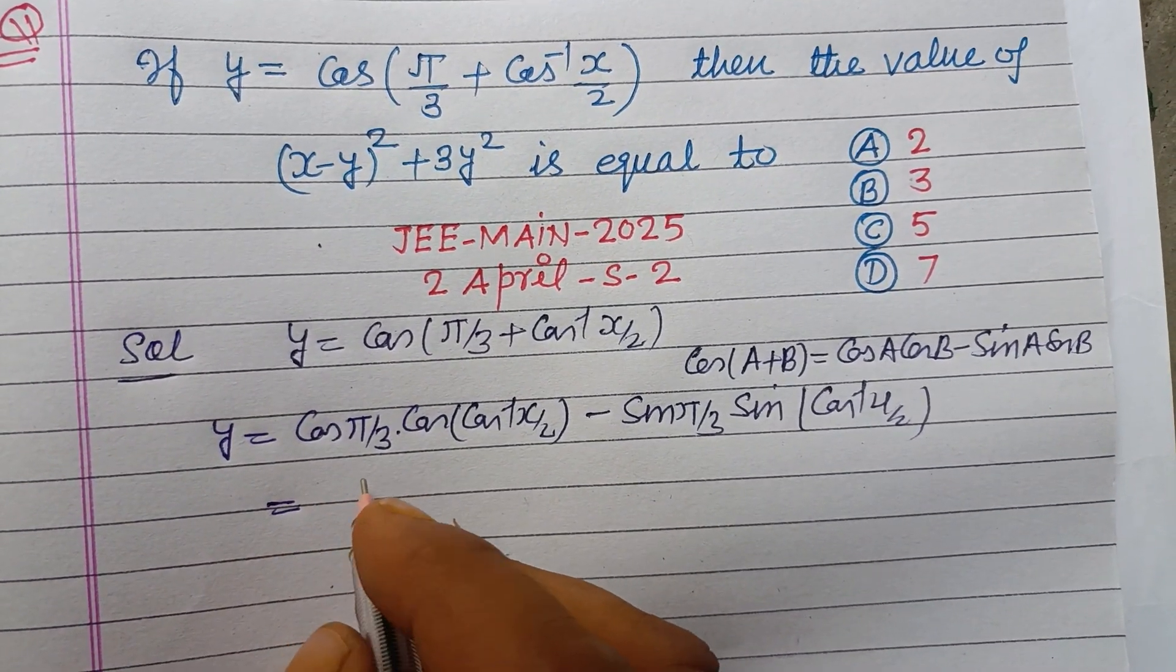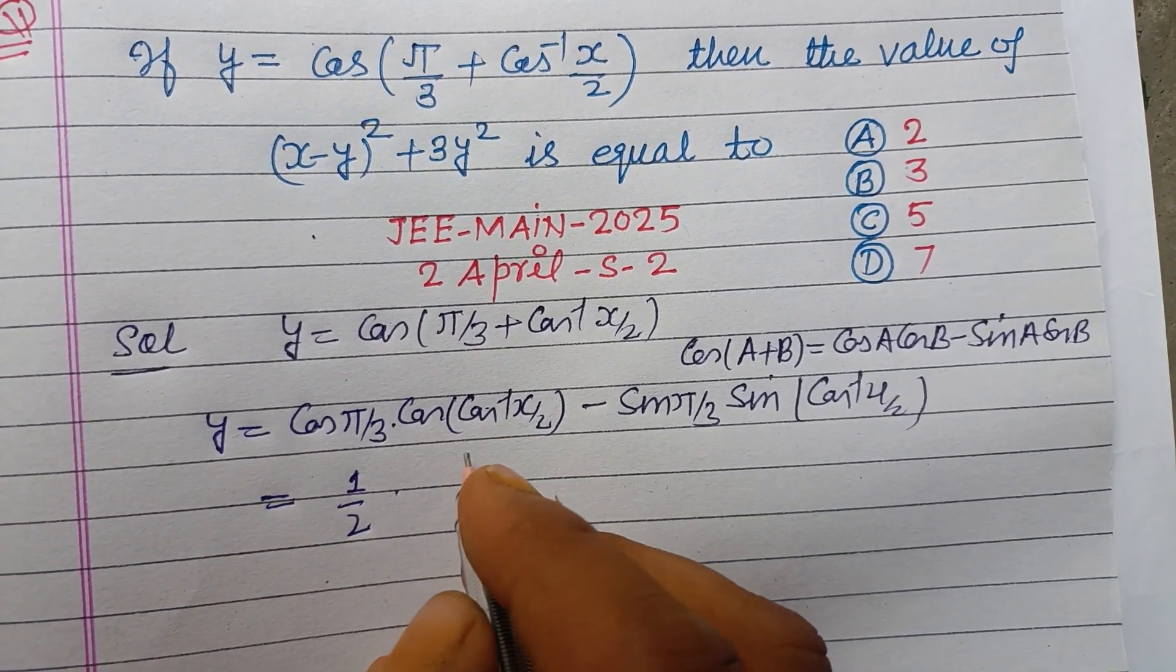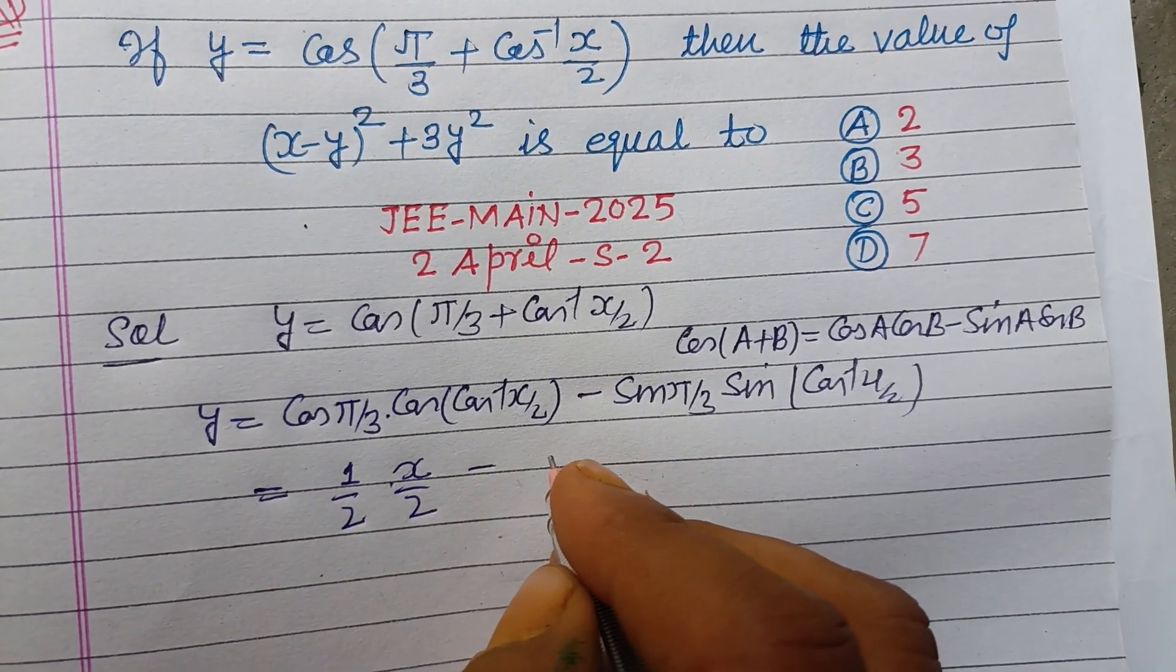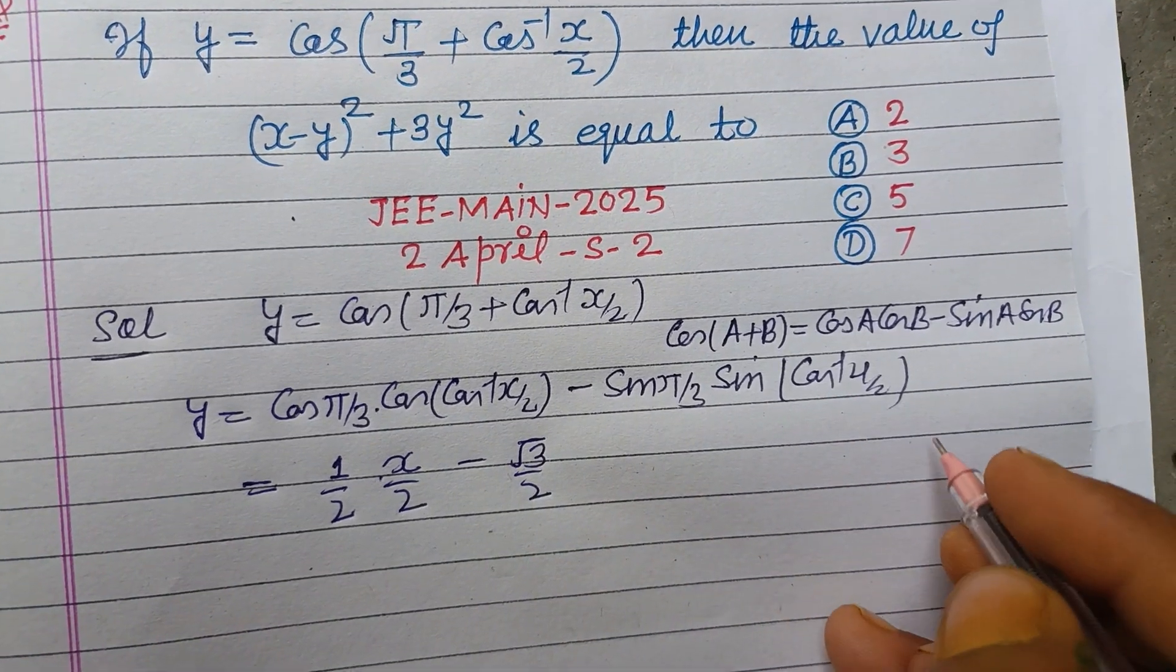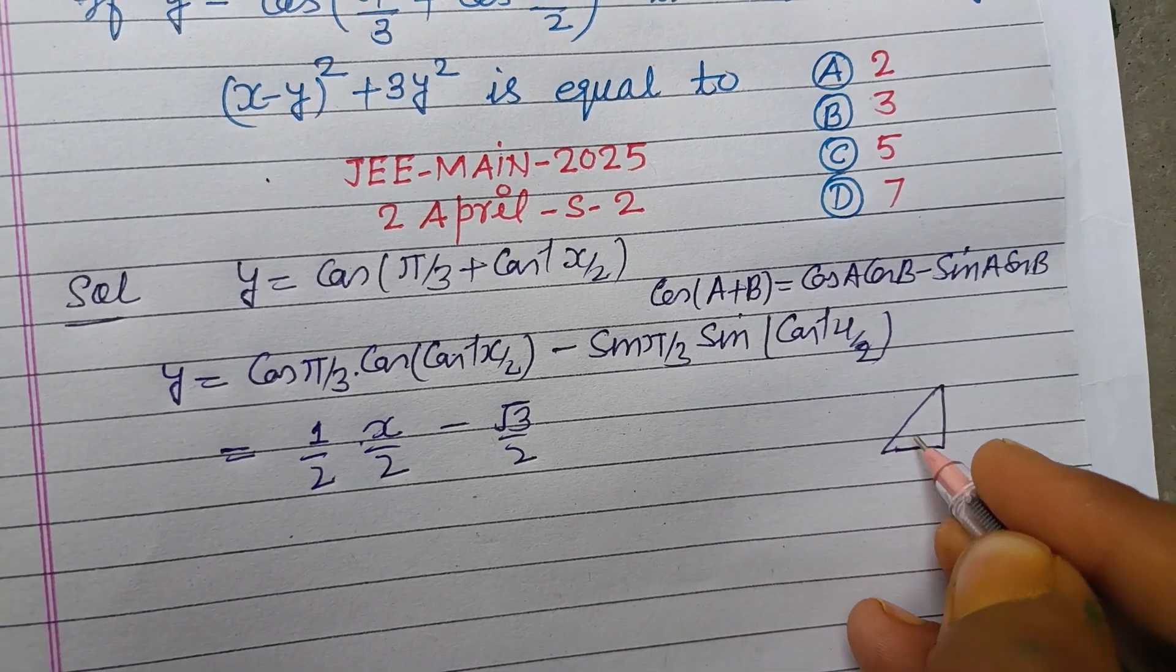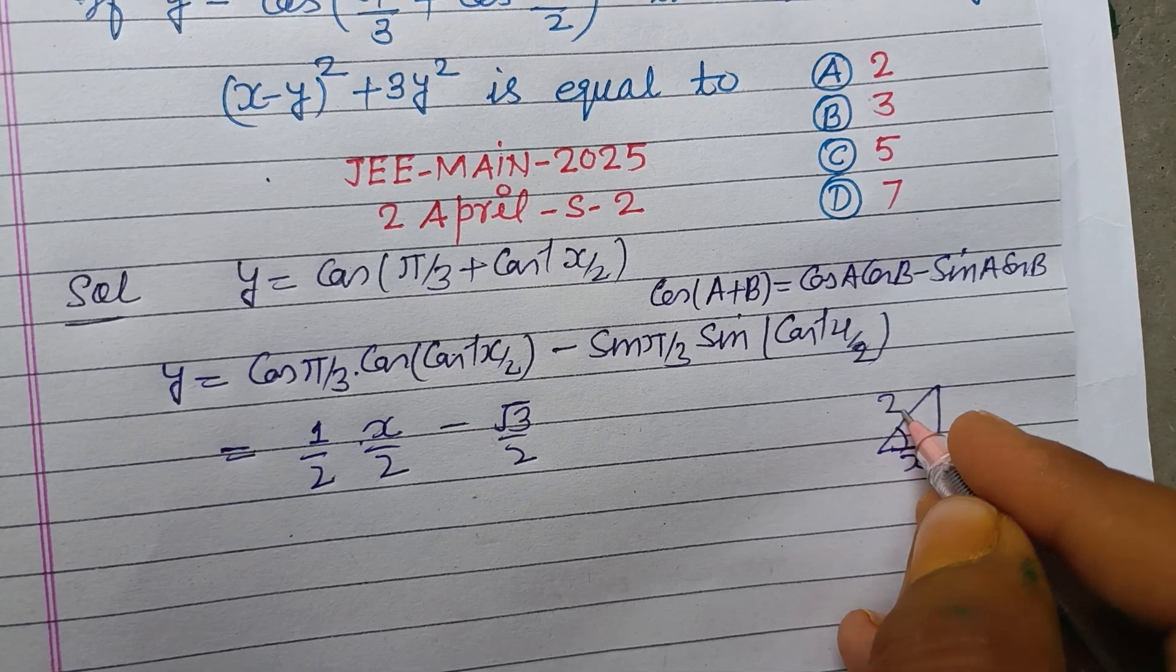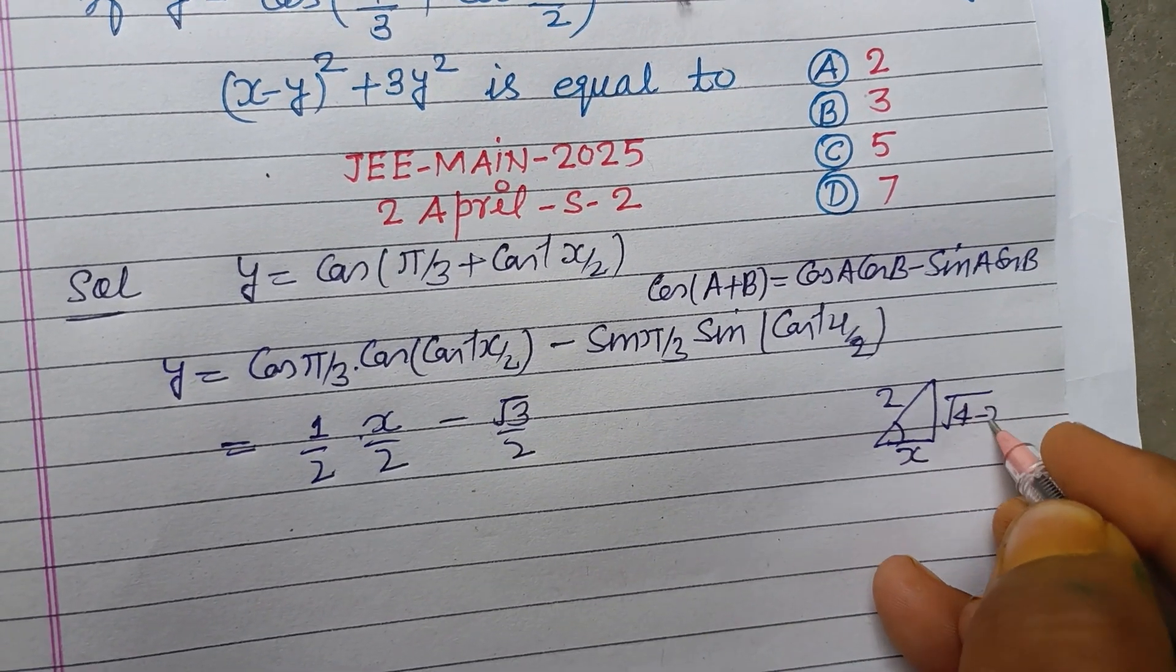So cos(πy/3) is cos 60 which is 1/2, and cos cos inverse is cancelled, we got xy/2 minus sin(πy/3) which is root 3 over 2, and cos inverse xy/2. If you have cos inverse xy/2, or cos theta is xy/2, then this is x and this is 2, and this becomes 2 square and 4 minus x square.